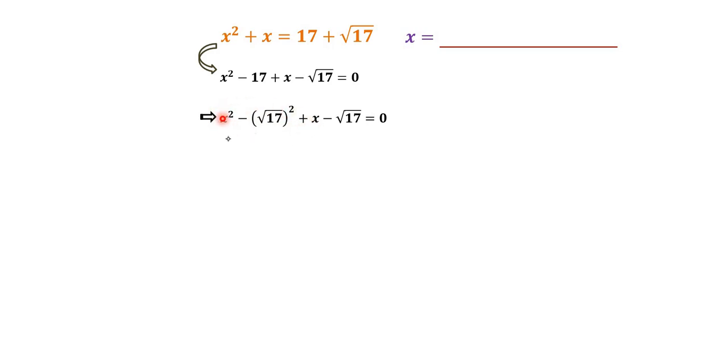Here we have something squared minus something else squared, and we can apply the rule a squared minus b squared equals a plus b times a minus b.